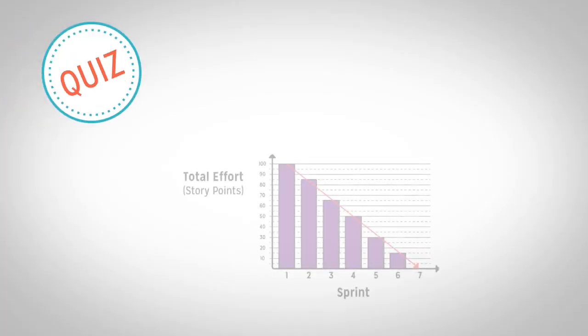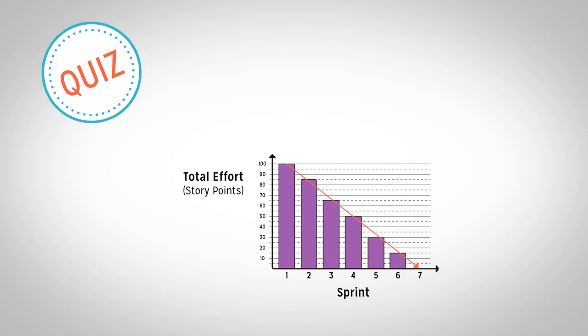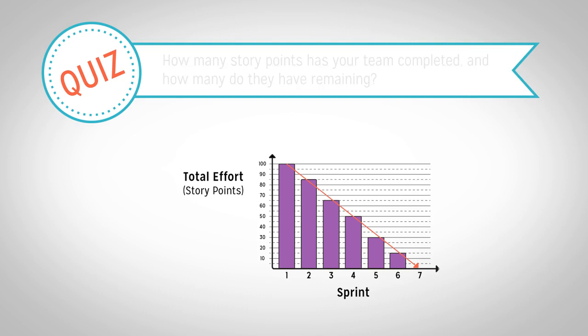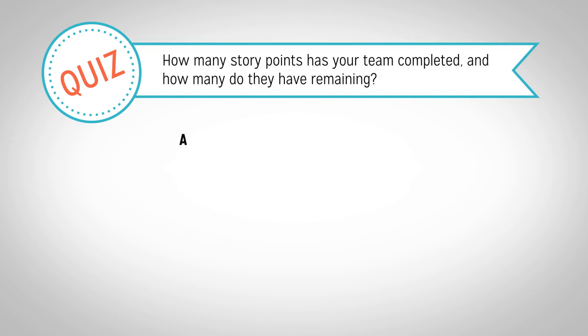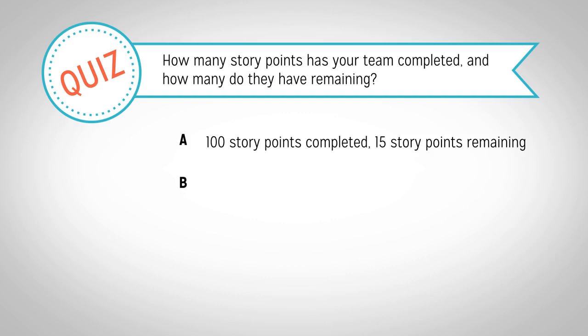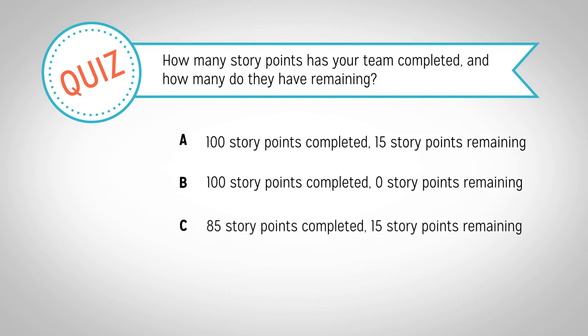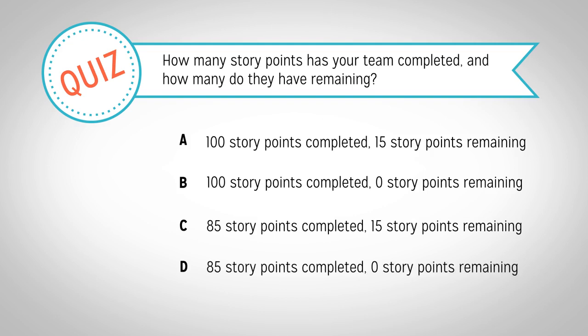Your development team is about to start their sixth and final sprint. This is the release burndown chart for the project. How many story points has your team completed, and how many do they have remaining? A: 100 story points completed, 15 remaining. B: 100 completed, 0 remaining. C: 85 completed, 15 remaining. Or D: 85 completed, 0 remaining.